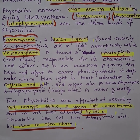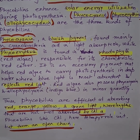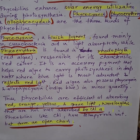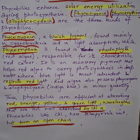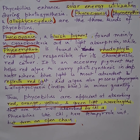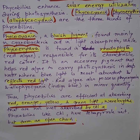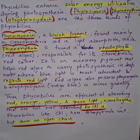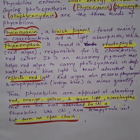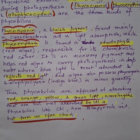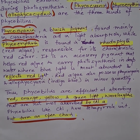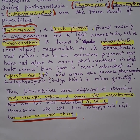Phycoerythrin is an accessory pigment that helps red algae carry out photosynthesis in deep water bodies, where it absorbs mainly blue light and reflects red light. Red algae also produce phycocyanin and allophycocyanin in minor quantities.